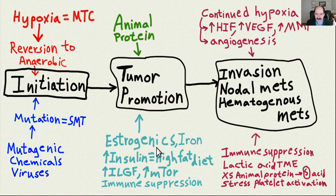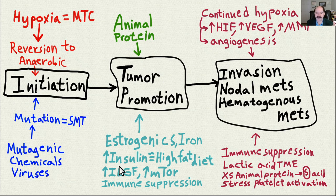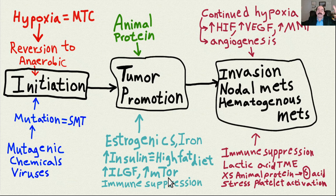Other tumor promoters include estrogenic chemicals, which promote estrogenic-sensitive tissues like the breast, male prostate, and uterus lining. High-fat diet causes increased insulin; when insulin is increased, it automatically increases insulin-like growth factor. Protein also increases insulin-like growth factor, and these increase mTOR. mTOR is like a building contractor — it says, 'I've got everything I need now, time to build, time to replicate this cell.'